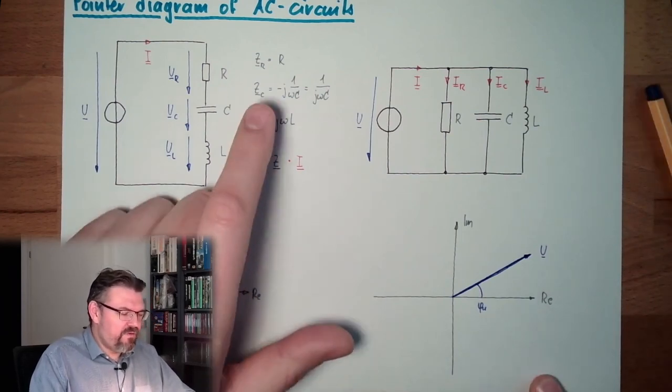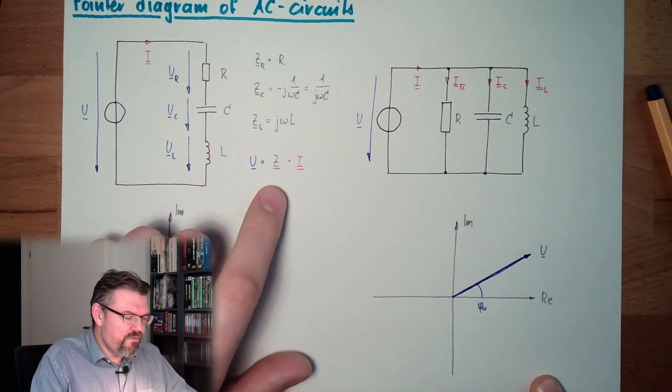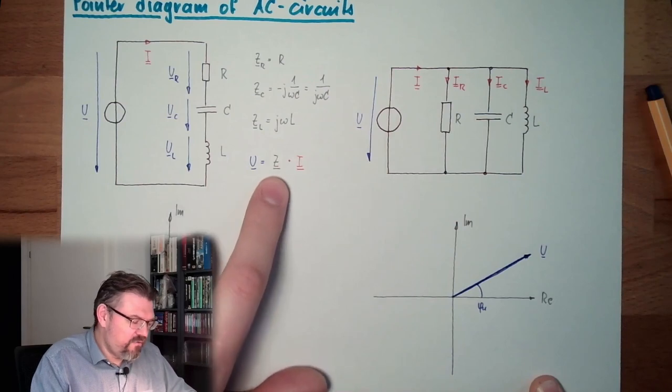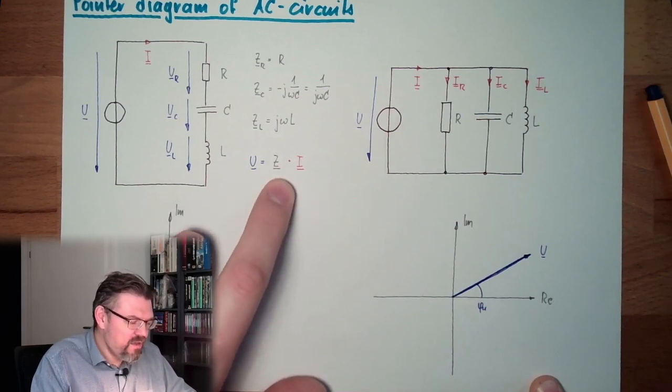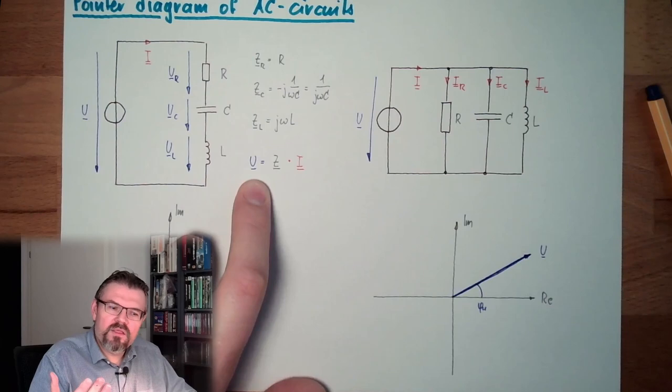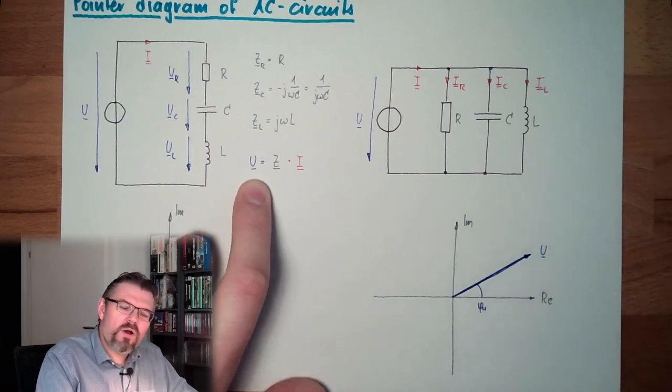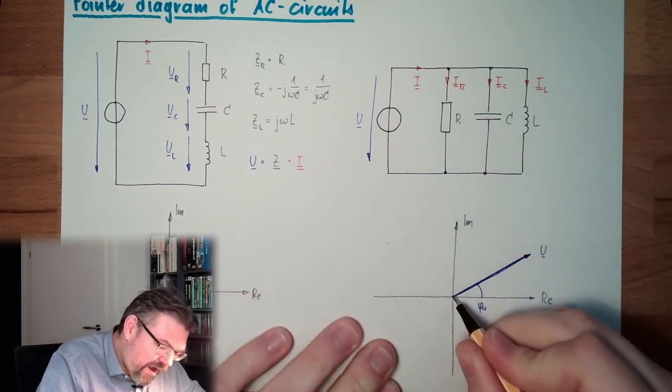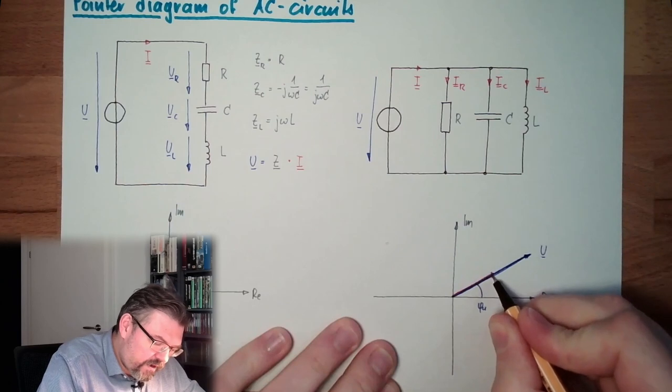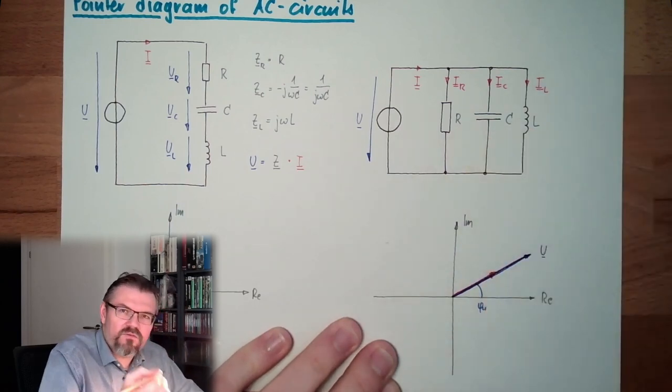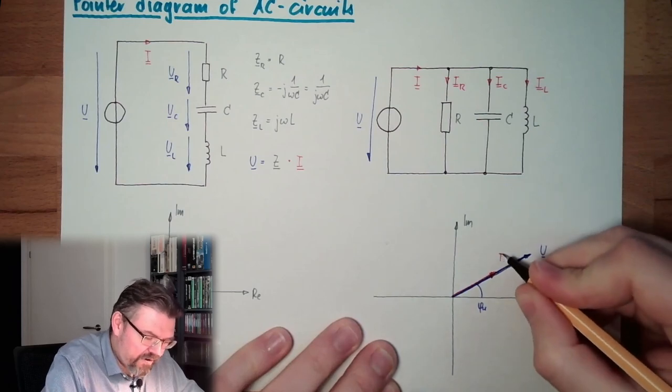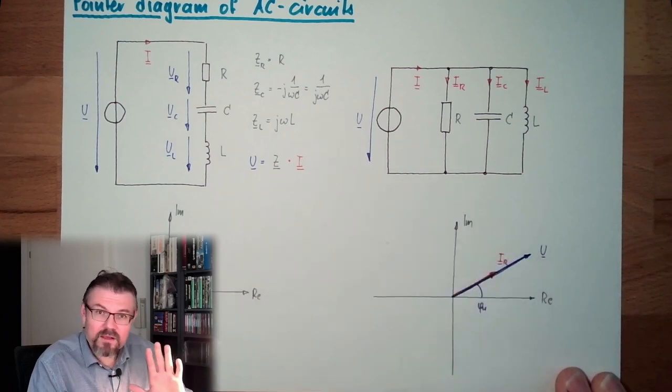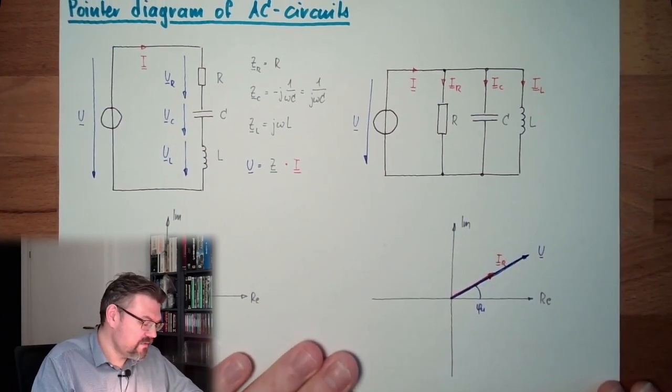And now, let's have a look. What is happening here with I? Let's start at the R. So here is R. So I equals U divided by R. R is a real number, there is no phase shift, so angle zero. And we already said last time, we are in phase, so my IR is going in this direction and has a certain length depending on the size of R. So this is IR here.